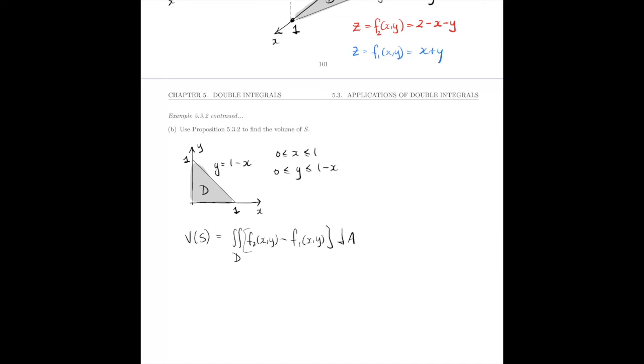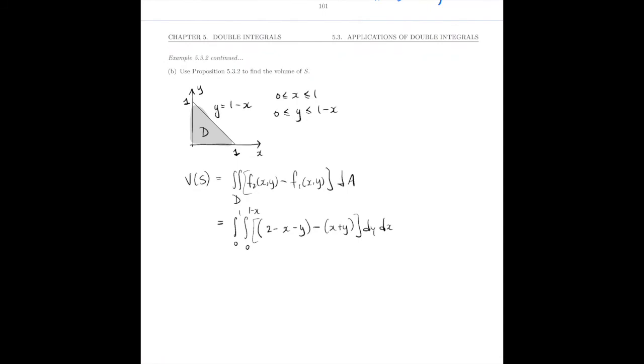I have all those pieces now, so I can set up that integral and evaluate it. We have the integral from 0 to 1 of the integral from 0 to 1-x of (2 - x - y) - (x + y) dy dx. Let's clean that up and evaluate: the integral from 0 to 1 of the integral from 0 to 1-x of 2 - 2x - 2y dy dx.